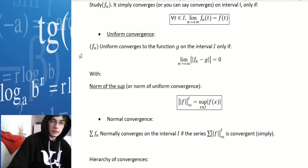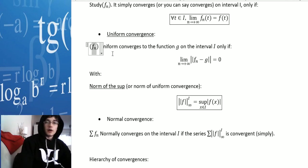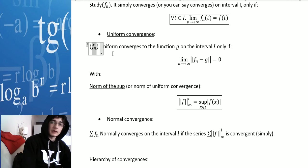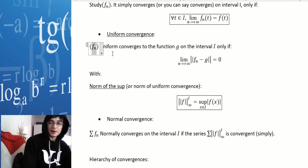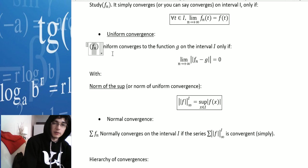Uniform convergence: we say fn has uniform convergence to the function g on the interval i, only if the limit when n goes to plus infinity of the infinite norm on the interval i is zero — what we call the norm of the sup, also called the norm of uniform convergence because it's mainly used to demonstrate uniform convergence — f being the supremum over x in the interval i of the absolute value of f minus g of x.